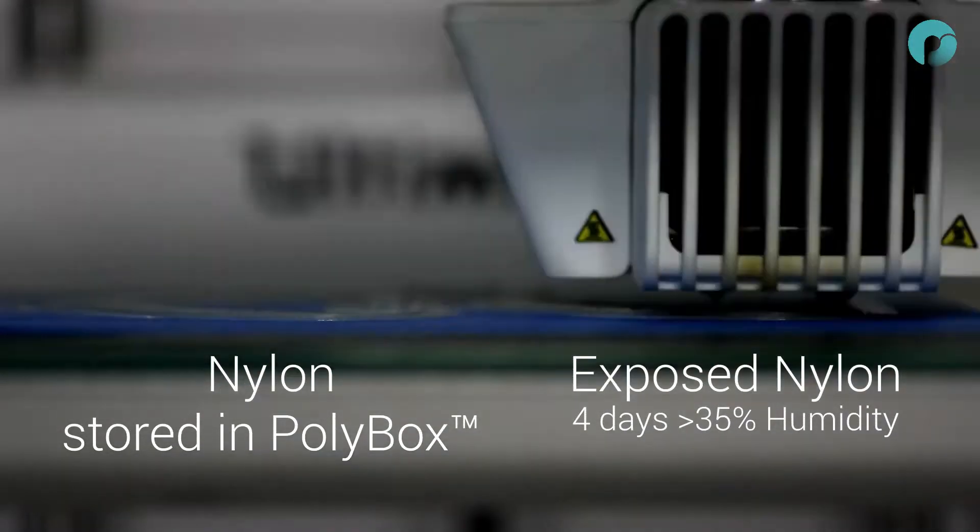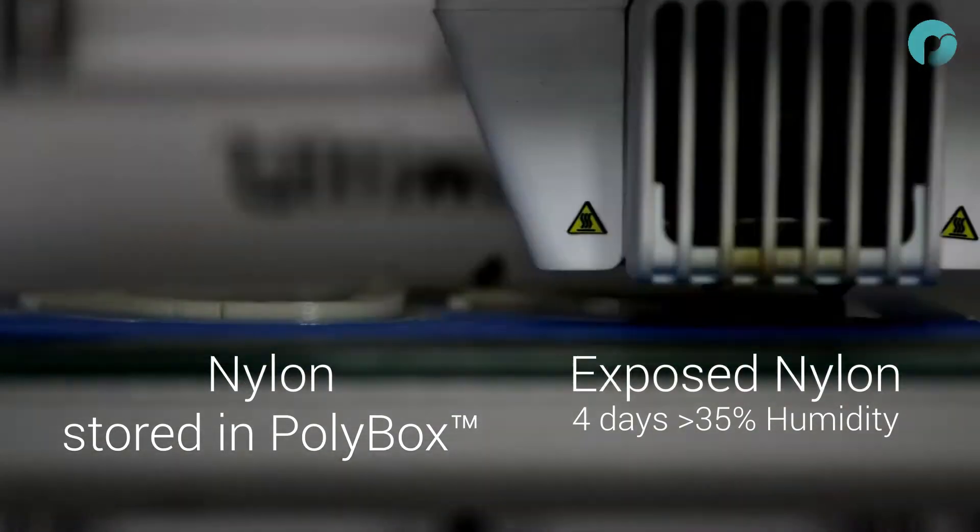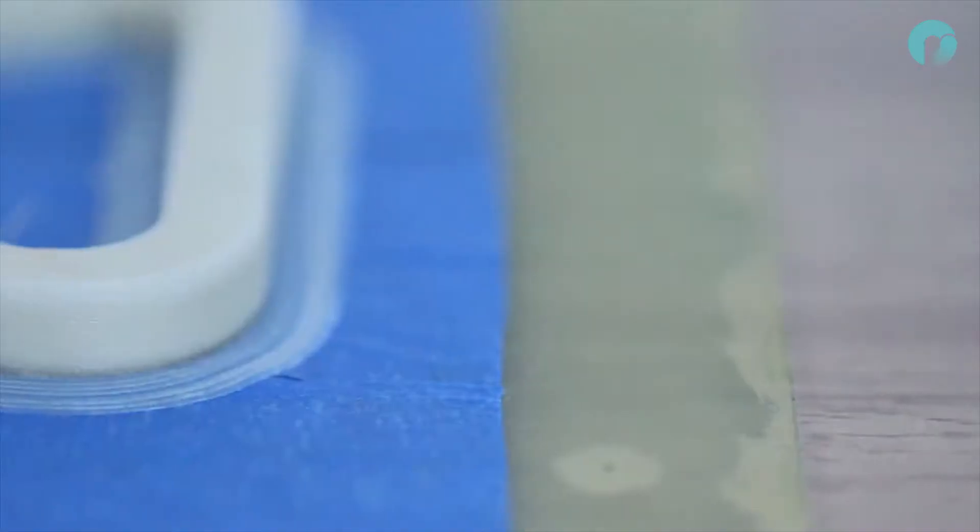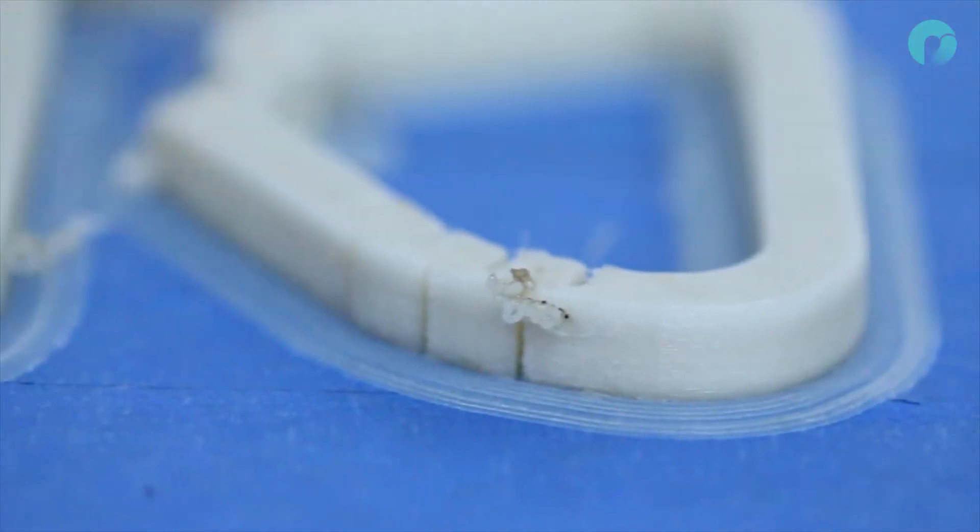In this test, we are printing two carabiners in nylon. Through the right extruder, the nylon has been exposed to over 35% humidity for 4 days, and feeding through the left is nylon stored in the polybox.